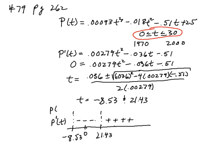So what does that say about my original percentage function? It says that it is decreasing on the interval from negative 8.53 and then increasing on the interval from 21.43 on.